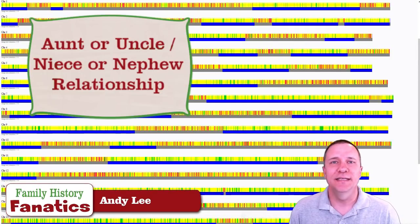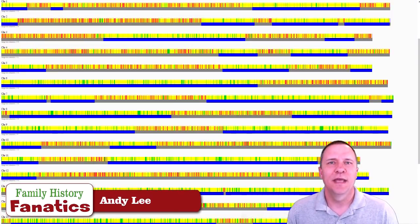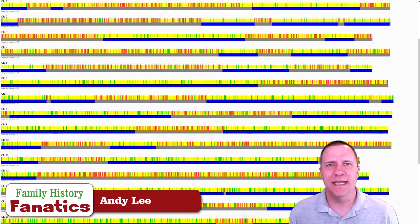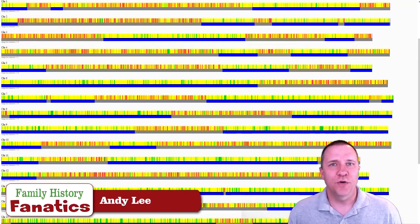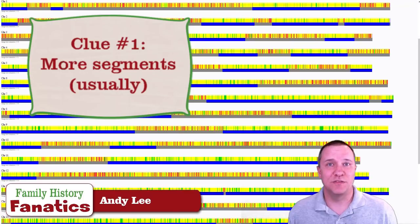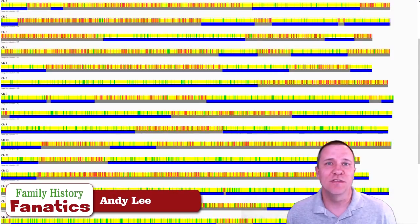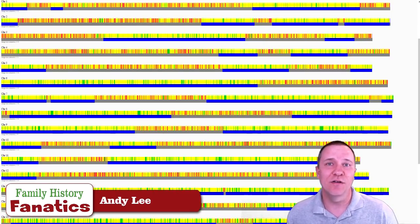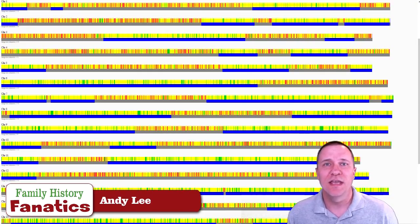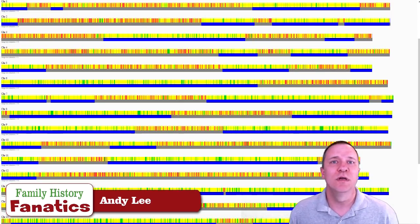The next relationship to look at is your aunts and uncles or nieces and nephews. These relationships also share 25% of their DNA, but how that DNA looks at the chromosome level is different because there's been a different number of recombinations between the aunt-uncle relationship and yourself. The first thing to look for is the number of segments — aunt-uncle relationships should have more segments than a grandparent-grandchild relationship, because there's been more recombination.